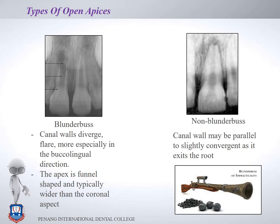Root apices are classified as blunderbuss or non-blunderbuss. The blunderbuss gun had a very wide opening, so a tooth root apex that is similarly wide is called a blunderbuss apex. If root formation has progressed for some time and then stopped, we have a non-blunderbuss apex. Whenever you take a radiograph and assess root development, these are the two types you will encounter.